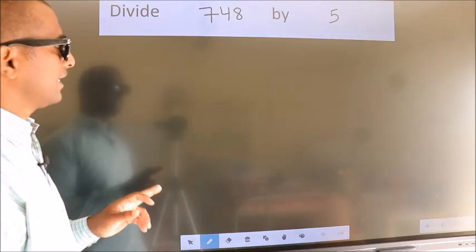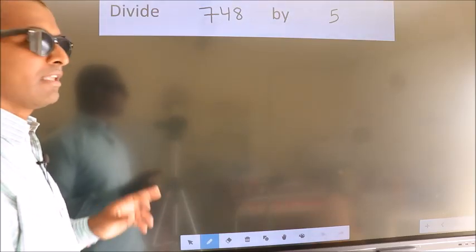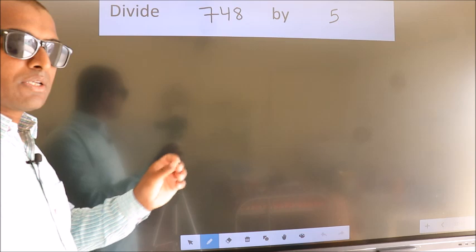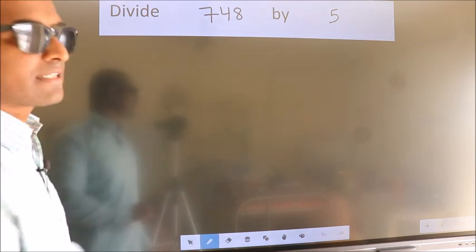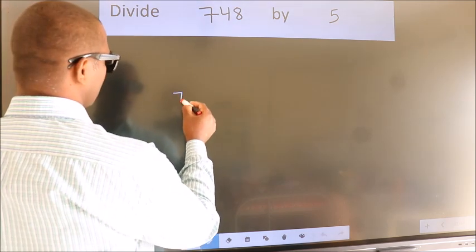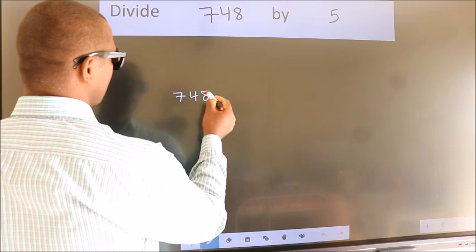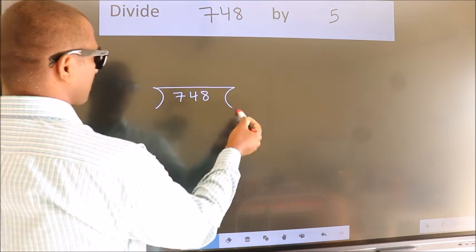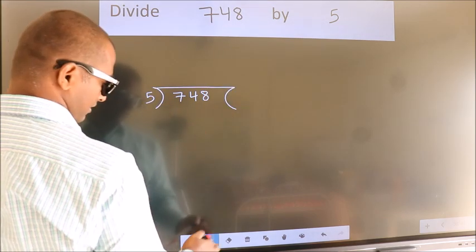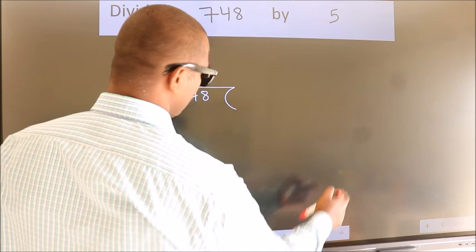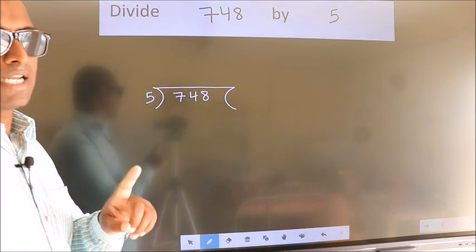Divide 748 by 5. To do this division, we should frame it in this way: 748 here, 5 here. This is your step 1.